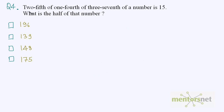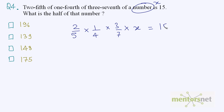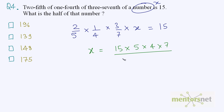Question 4: 2/5 of 1/4 of 3/7 of a number is 15. What is half of that number? So we have 2/5 of 1/4 of 3/7 of x is equal to 15. Let us find x, then we will find half of x. Keeping x to the left, x is equal to 15 times 5 into 4 into 7 divided by 2 into 3.